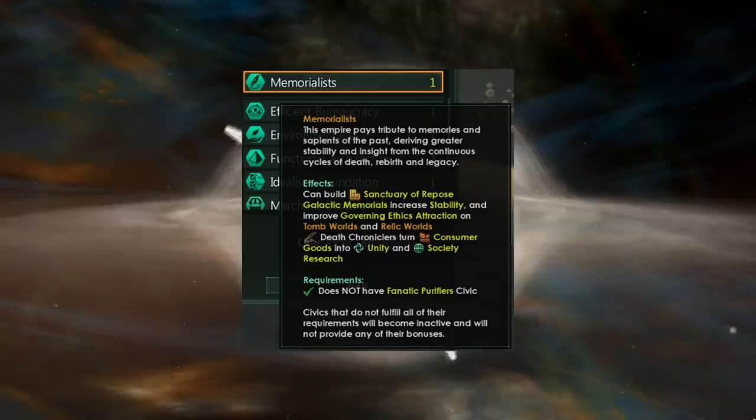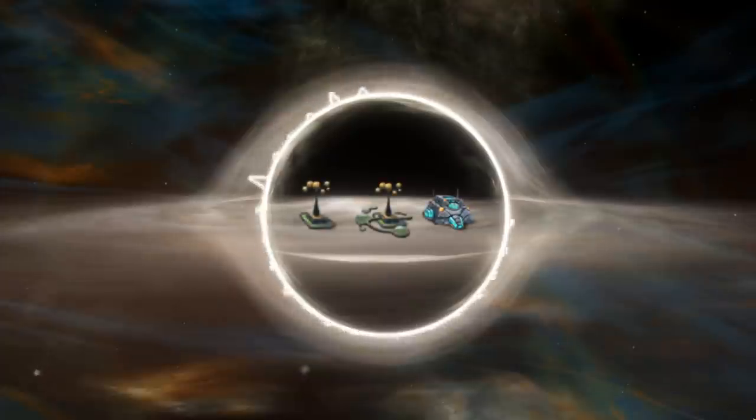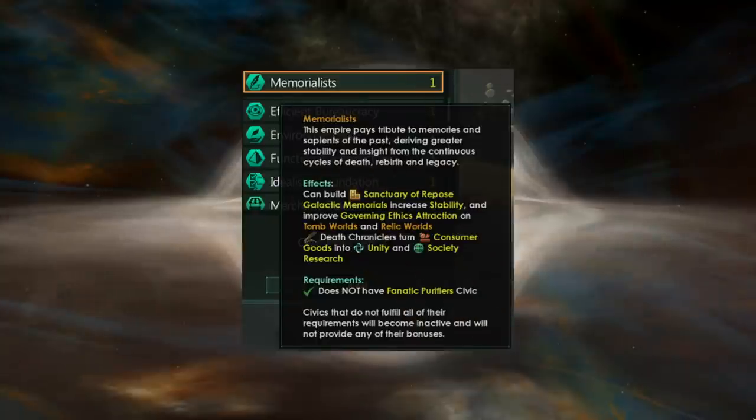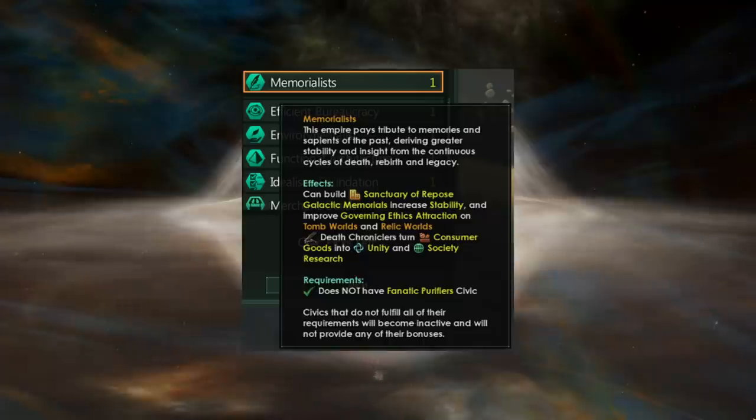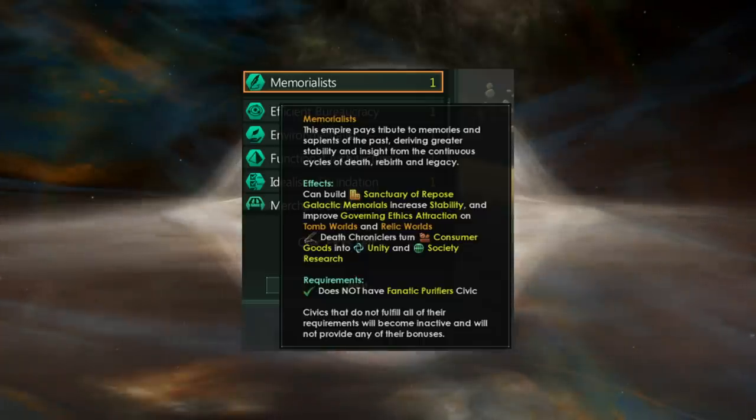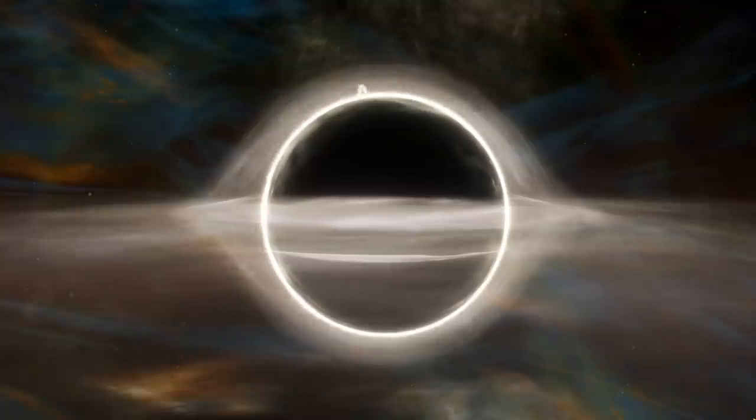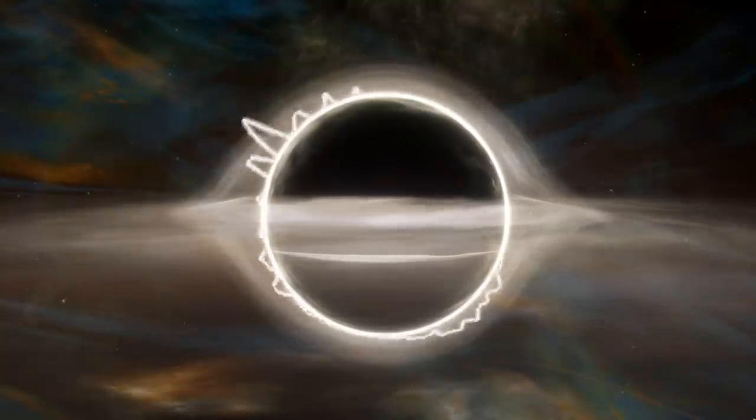What does it do? It basically takes the monument or heritage site and that line of buildings and replaces it with a new structure called the Sanctuary of Repose. Now the Sanctuary of Repose if it replaces the building and I will cut into this a little bit more later on seems to be incredibly powerful as long as you can find yourself a nice little tomb world or relic worlds to go with it.